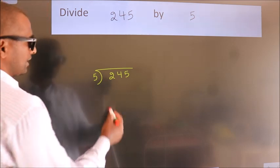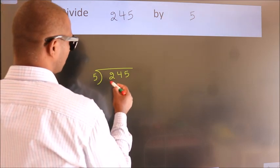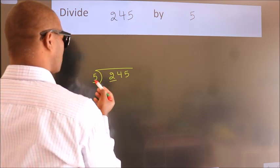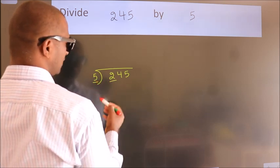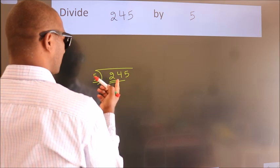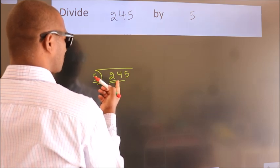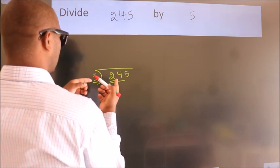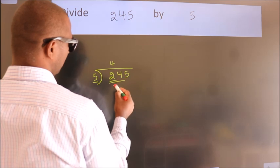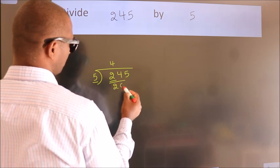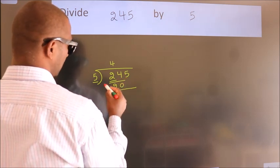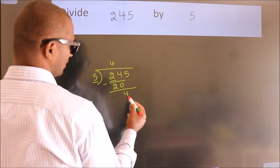Next. Here we have 2, here 5. 2 is smaller than 5, so we should take 2 numbers: 24. A number close to 24 in the 5 times table is 5 fours, 20. Now we should subtract. We get 4.